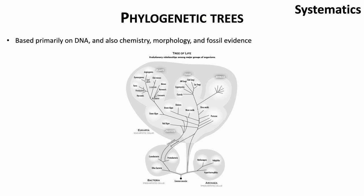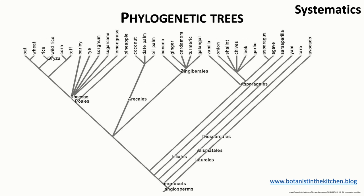These evolutionary relationships are displayed as phylogenetic trees, like the one we saw last week that displays a bird's eye view of all of the diversity of life on earth. To get a better idea of how to read phylogenetic trees, we are going to zoom in on the angiosperms and look at just one evolutionary lineage within the angiosperms called the monocots. This tree comes from one of my favorite websites, The Botanist in the Kitchen, and shows some important monocots in the human diet.